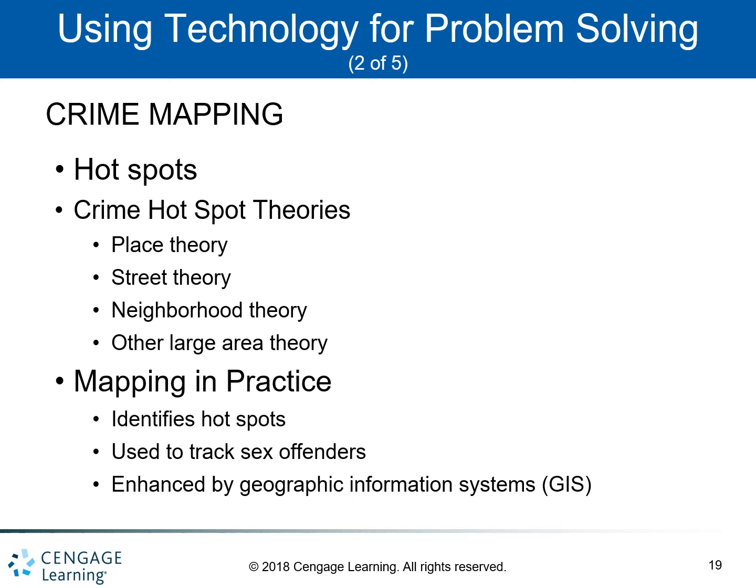Now let's talk about crime mapping. Crime mapping involves maps that show where crimes have occurred and can help direct police resources to locations where they are most needed, enabling law enforcement to protect citizens more effectively. Hotspots are areas where incidents of crime and disorder tend to cluster in close proximity to one another. There are several theories that attempt to analyze why crime and disorder concentration exist, including street theories, neighborhood theories, and other large area theories.